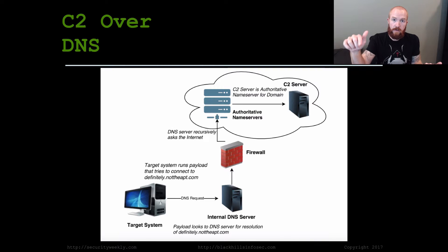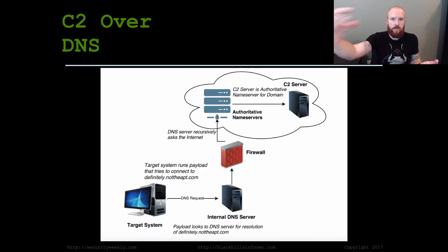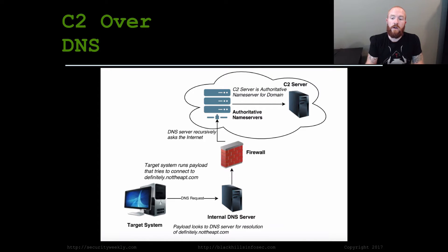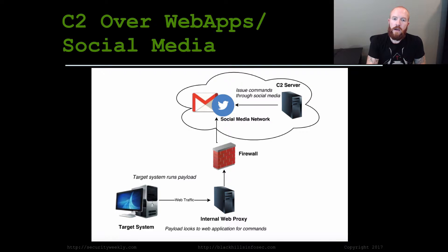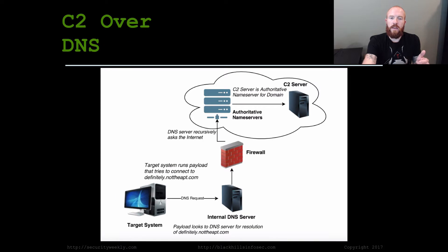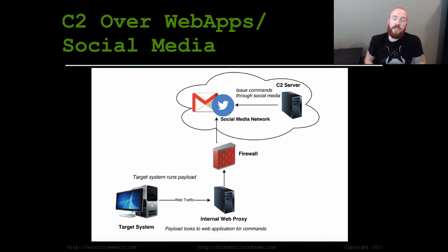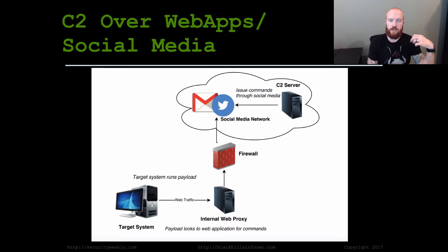All of the DNS packets routed through the network will go through the internal DNS server, out the firewall to other name servers on the internet, and finally end up at the C2 server — making it an extremely stealthy channel. One of the best tools for testing this out yourself is DNScat.